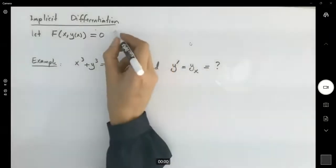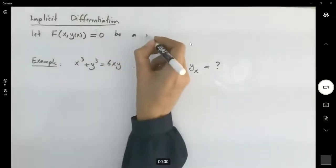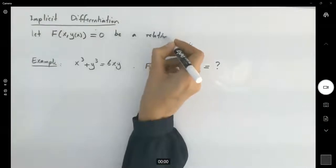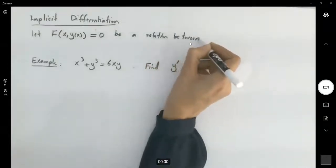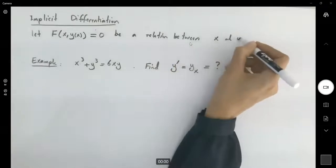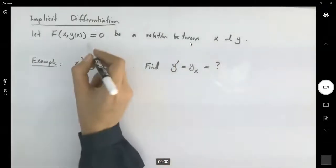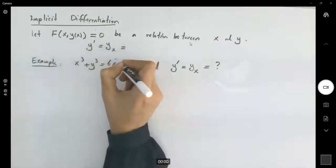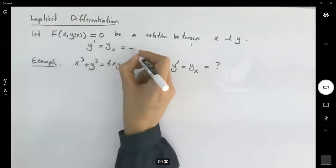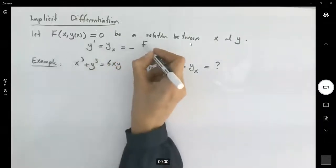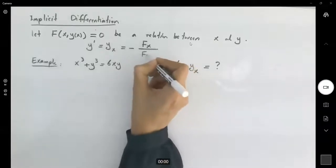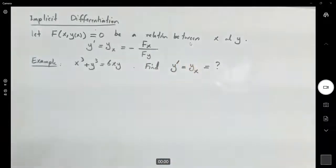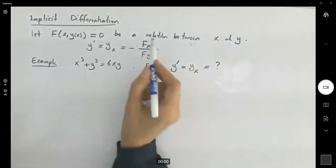In that case, to find the derivative of y with respect to x, we follow the formula: y' = -∂F/∂x divided by ∂F/∂y. This is implicit differentiation.